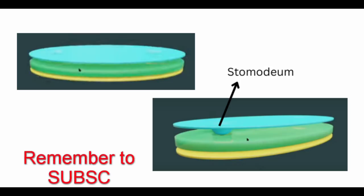In this tri-laminar disc, you can see two membranes. One is at the cranial end, called the oropharyngeal membrane, and towards the caudal end there is a cloacal membrane. Here we are only concerned about the cranial end. At the site of this membrane, the endoderm is fused with the ectoderm with no mesoderm in between — a bilaminar structure — and this oropharyngeal membrane is the future stomodeum, or the future mouth of the baby.